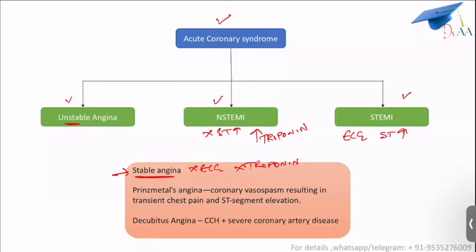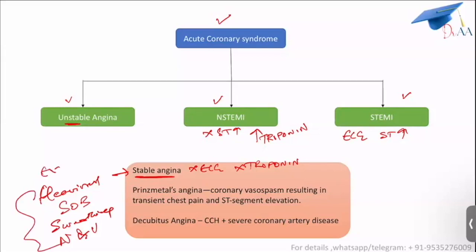When do we call it stable angina? Stable angina is when the patient has typical symptoms — mainly heaviness, possibly radiating to the left arm or neck, associated with shortness of breath, profuse sweating, and maybe nausea and vomiting. These symptoms appear only on exertion, not at rest. A typical history would be: when I walk 100 meters, I start having chest heaviness with sweating, then I rest for a few minutes and everything subsides.